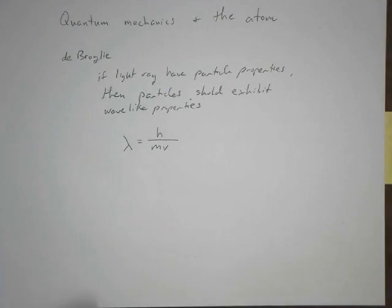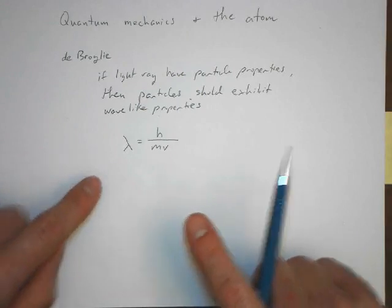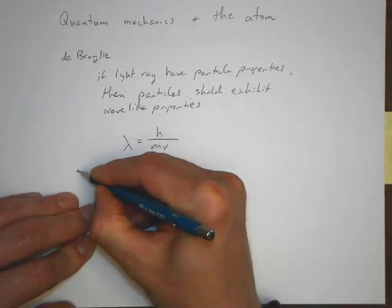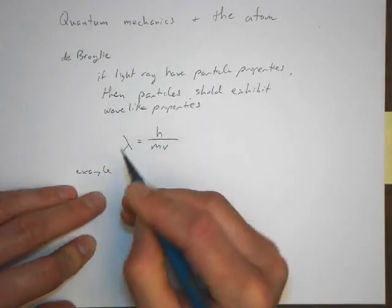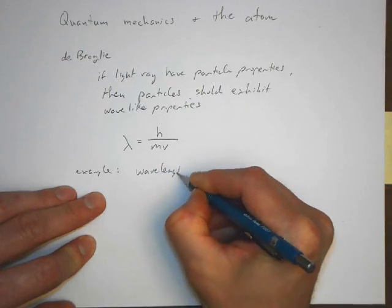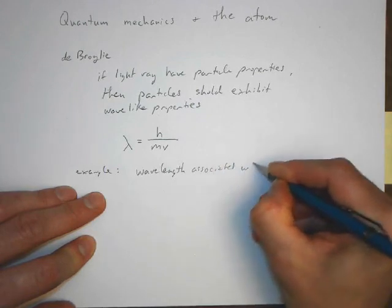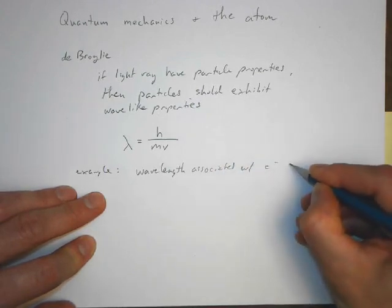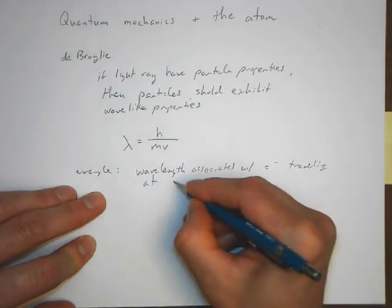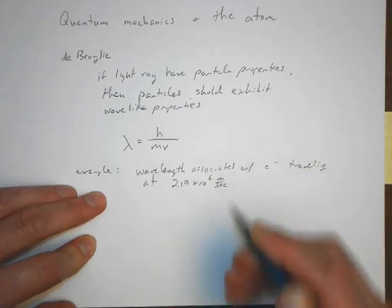So we could ask ourselves, let's do an example first. Let's look at an example. What's the wavelength associated with an electron traveling at 2.19 times 10 to the 6th meters per second?